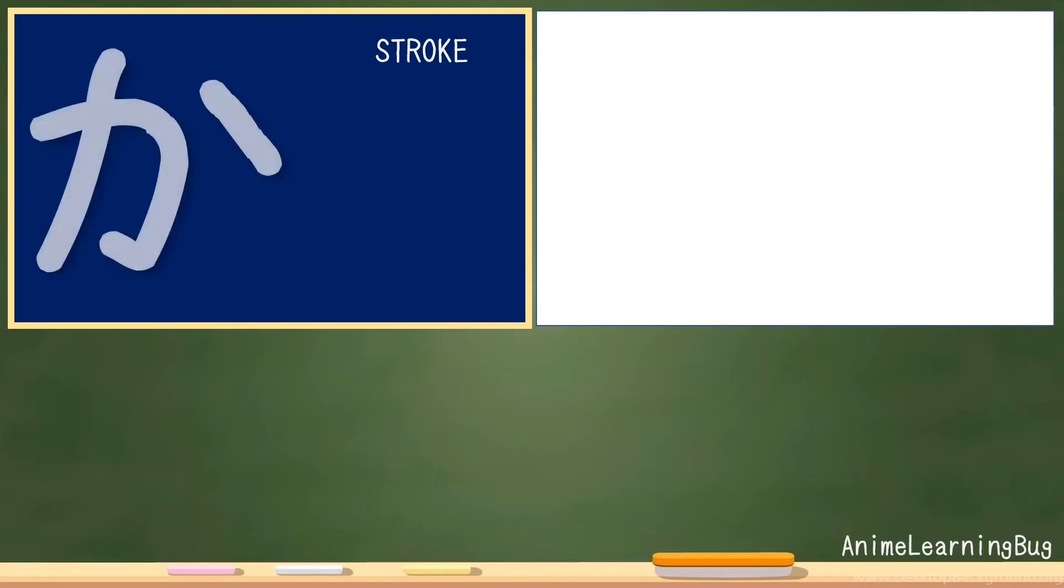First letter is ka. There are three strokes for this character. You can check on the video on the right side for the proper stroke order.